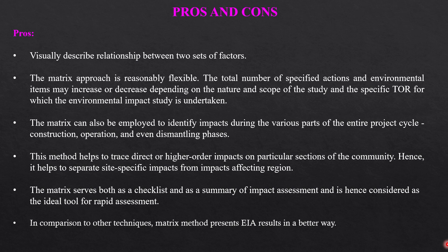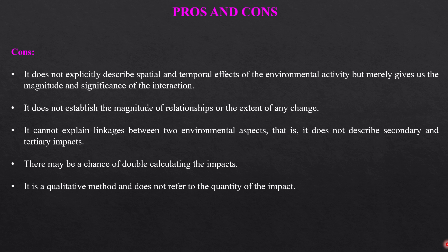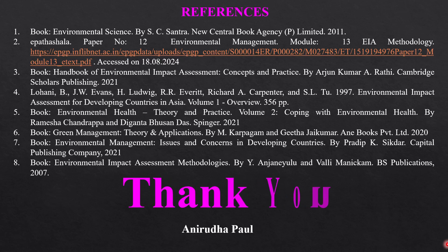However, there are some shortcomings. The matrix does not explicitly describe spatial and temporal effects of environmental activity, but merely gives magnitude and significance of the interaction. It does not establish the magnitude of the relationship or the extent of any change, and cannot explain linkages between two environmental aspects — it does not describe secondary or tertiary impacts. There may be a chance of double counting of impacts because a large number of impacts exist and some are common. It is a qualitative method and does not refer to any quantity of the impact. For more details, you can read the listed references.